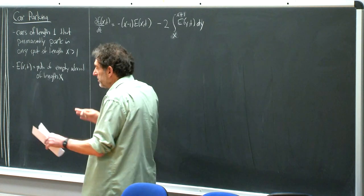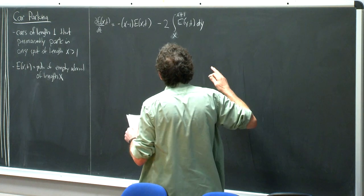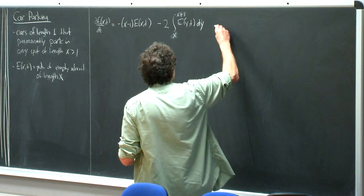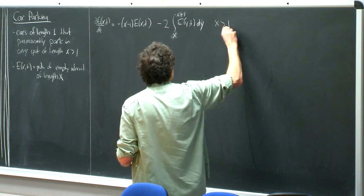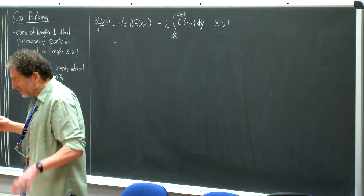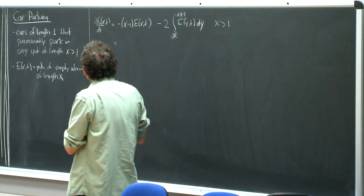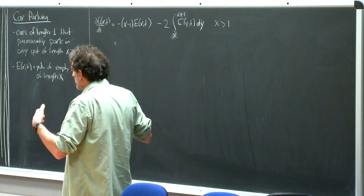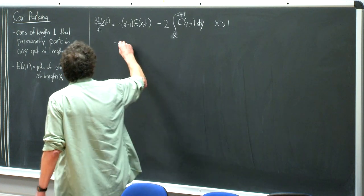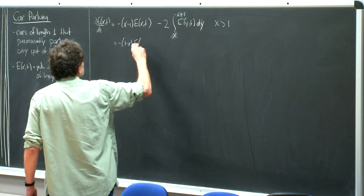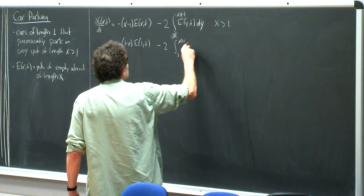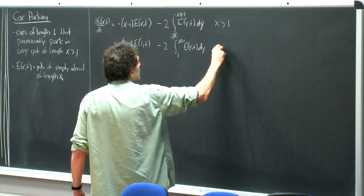This second term corresponds to filling the interior: there is a larger parking spot but part of the car impinges on the empty interval of size x, so this is the loss term. For the case where the parking spot is smaller than one, all you have to do is reverse the roles of x and one — you're putting a parking spot over a car rather than a car in a parking spot.